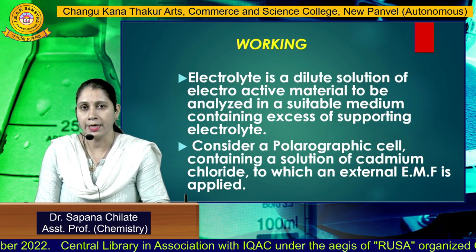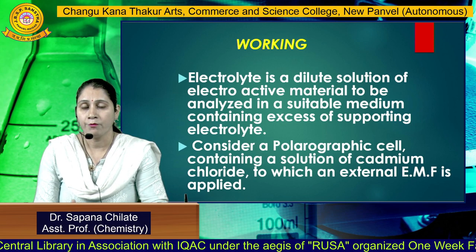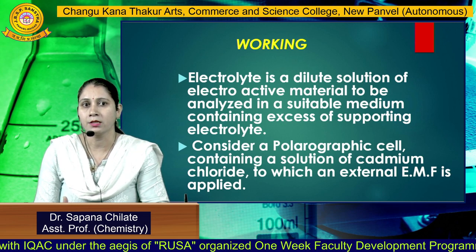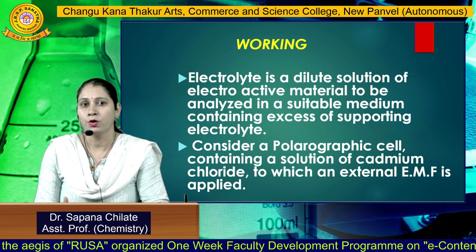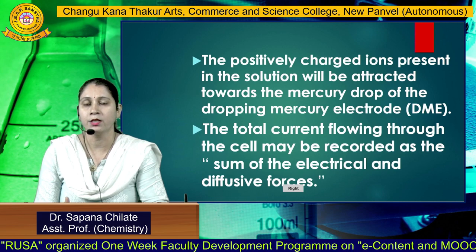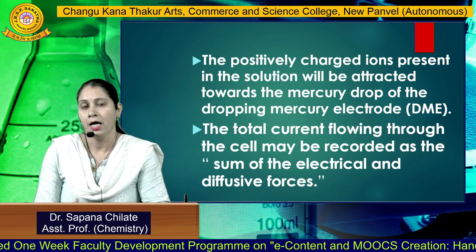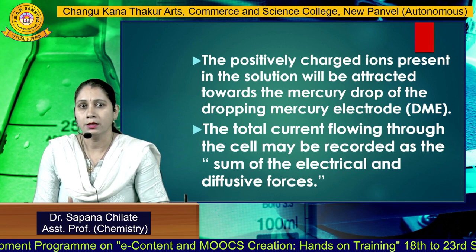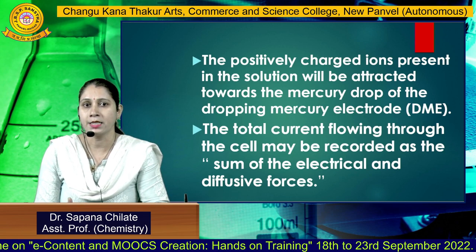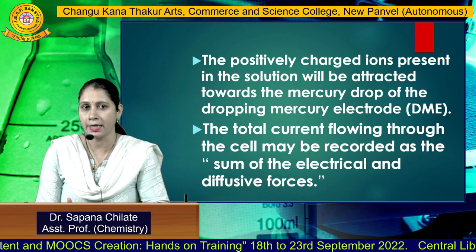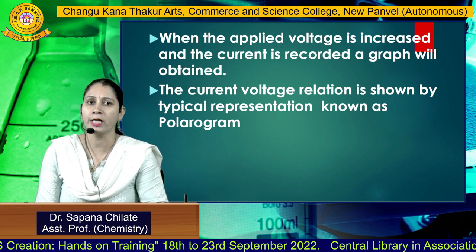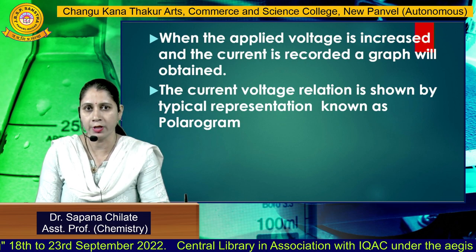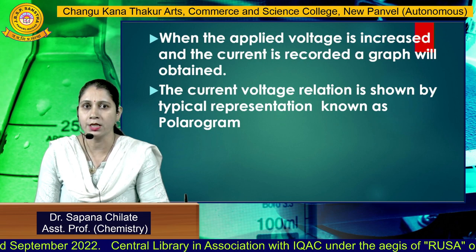If we see the working of the entire polarographic cell, we take a dilute solution of electroactive material which has to be analyzed. For example, if we take a cadmium chloride solution, an external potential is applied ranging from 0 to minus 3 volts. The positively charged ions present in the solution will be attracted towards the mercury drop, and the total current flowing through the system is recorded as the sum of electrical and diffusive forces. When the applied potential or voltage is increased, current is recorded and we get a particular sigmoid type curve. This current-voltage relationship is known as a polarogram.